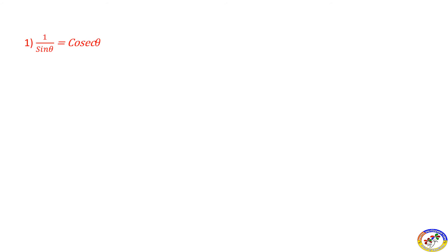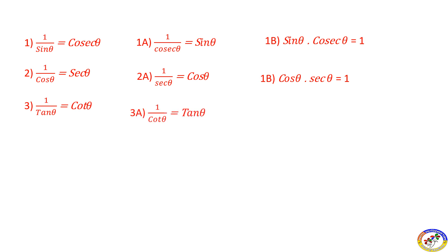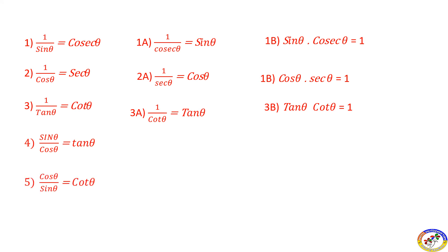So now we have five formulas. First: 1 by sin θ equals cosecant θ; interchanging, 1 by cosecant θ equals sin θ, and sin θ times cosecant θ equals 1. Second: 1 by cos θ equals secant θ; interchanging, 1 by secant θ equals cos θ, and cos θ times secant θ equals 1. Third: 1 by tan θ equals cot θ; interchanging, 1 by cot θ equals tan θ, and tan θ times cot θ equals 1. Also, sin θ by cos θ equals tan θ, and cos θ by sin θ equals cot θ.